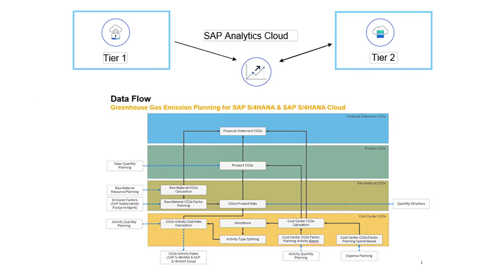We all know the critical role that greenhouse gas emissions play in the global environment and its substantial impact on the climate and on the financials as well. Our first innovation is greenhouse gas emission planning, which is the first release capability of the Green Ledger. In a two-tier ERP landscape, organizations can connect their subsidiaries and headquarters to SAP Analytics Cloud for planning future carbon emissions along with financials in an integrated way at group level.